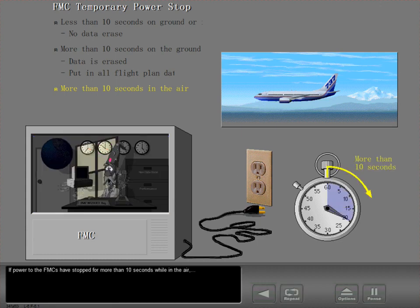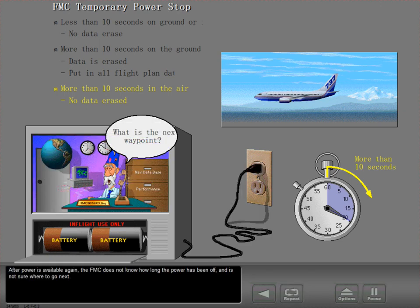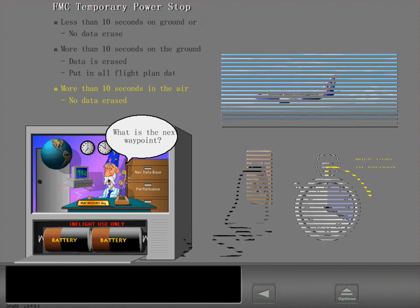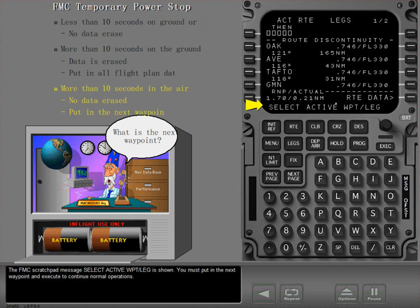If power to the FMCs has stopped for more than 10 seconds while in the air, then the FMC internal battery holds the flight plan data in memory for an extended period of time. After power is available again, the FMC does not know how long the power has been off and is not sure where to go next. The FMC scratchpad message 'Select Active Waypoint Leg' is shown. You must put in the next waypoint and execute to continue normal operations.